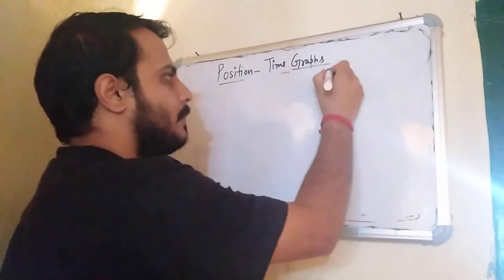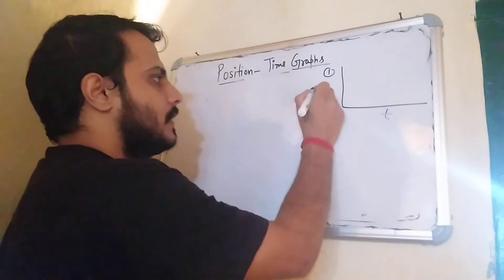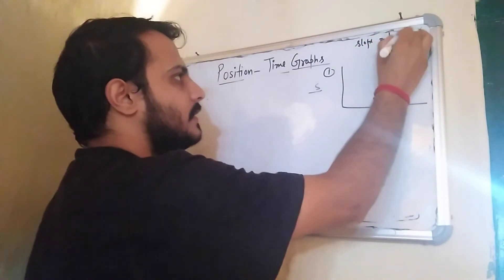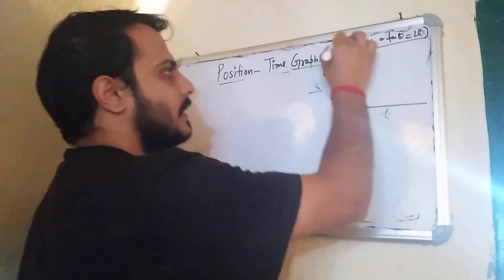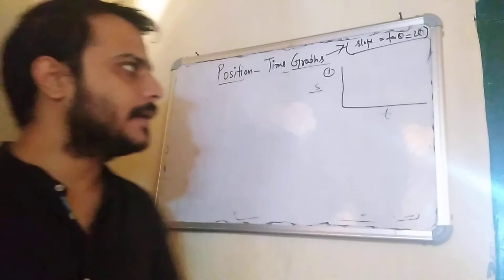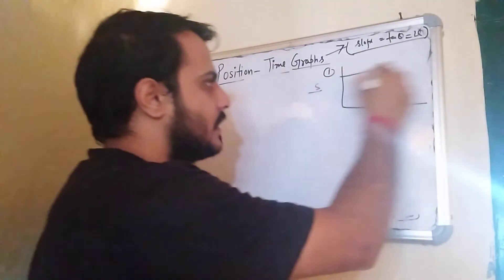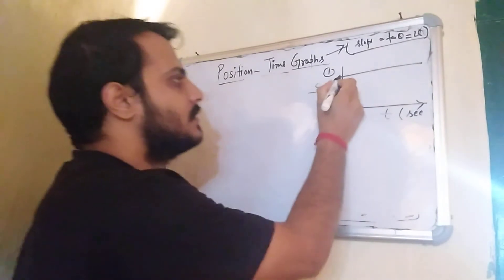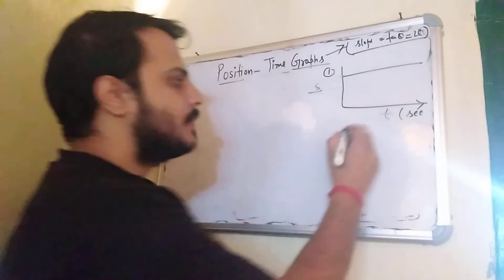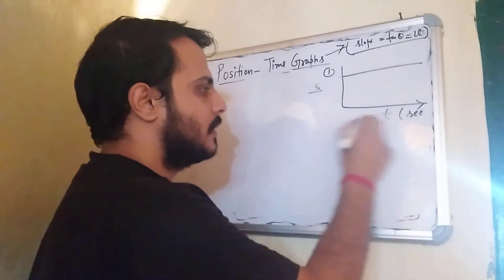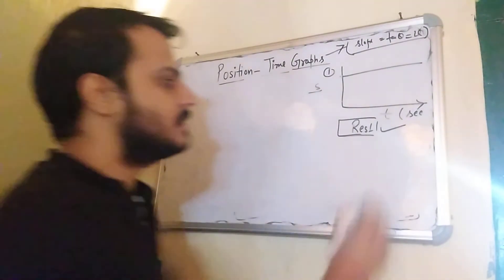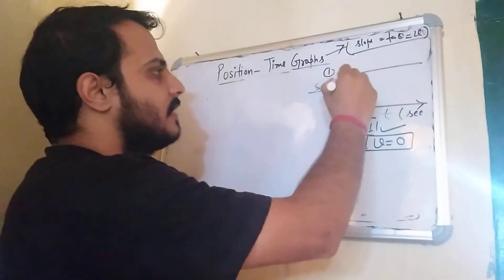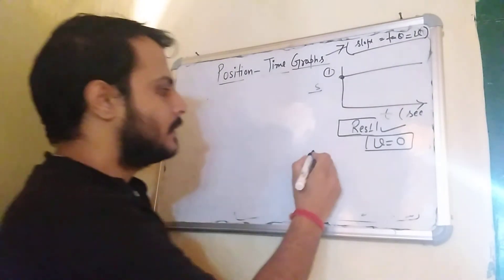Now I am going to share different position-time graphs. The first graph is quite simple. Here we have time on the x-axis and position on the y-axis. Our result is: slope = tan(theta) = velocity. This first graph shows that with time, the body's position is not changing, which means the body is at rest. In this case, velocity equals zero.